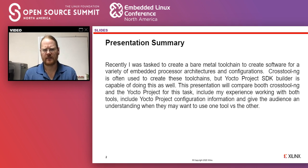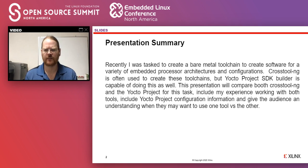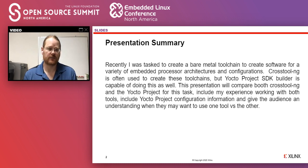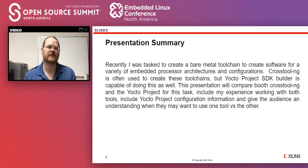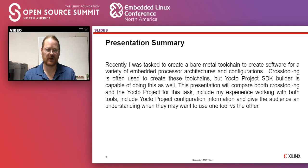Recently, I was tasked with creating a bare metal tool chain for one of our products. In the past, it had always been done with Cross Tool NG, or sourced from another location such as ARM. We found that due to limited resources, we needed to have common bugs and common features between the Linux tool chains, the bare metal tool chains, and even non-Linux, non-bare metal tool chains. The first step was to see if we could move from Cross Tool NG to a Yocto Project type build.